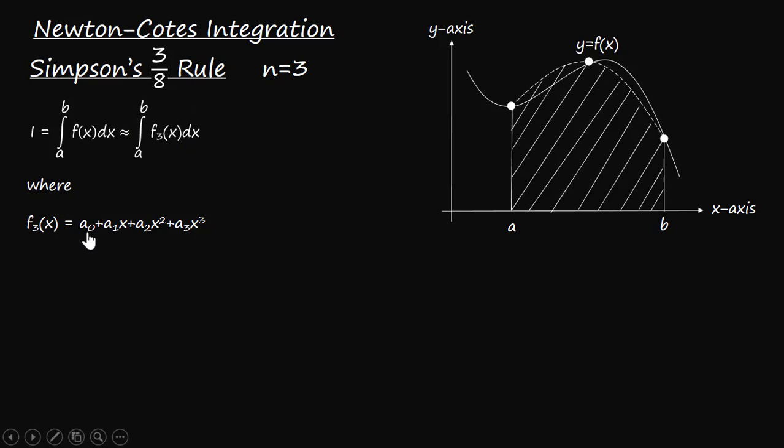Here this function, which is the third order polynomial function, the value of a_0, a_1, a_2, a_3, which are basically the coefficients of this polynomial function, can be determined using Lagrange's interpolation formula. We have discussed about Lagrange's interpolation formula in details in our previous lectures. You can find the link of that lecture in the description box below.